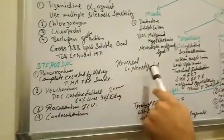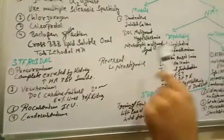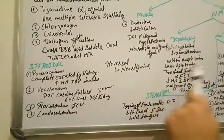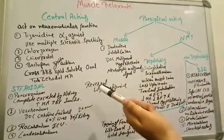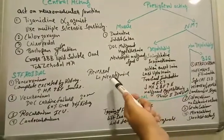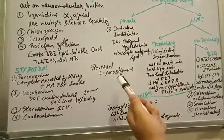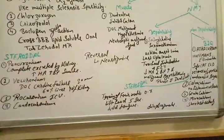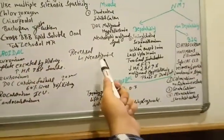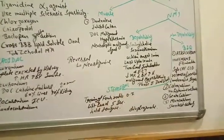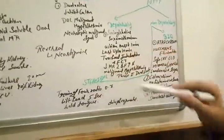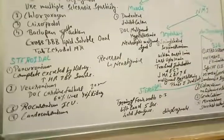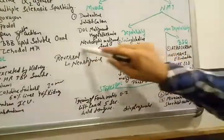But for pancuronium, vecuronium, we need to give reversal agent like neostigmine. Physostigmine also we can give but it crosses the blood-brain barrier and we do not need the physostigmine. Edrophonium also in this group classification. Pyridostigmine also. Edrophonium we are going to use for diagnosis of myasthenia gravis. Onset of action is very fast.